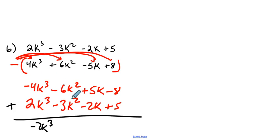Negative 6 minus 3, negative 9K squared. 5 minus 2. And then right here it gets us negative 3. Cool beans. See you next time.